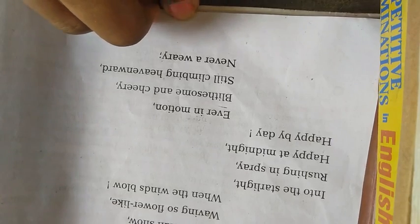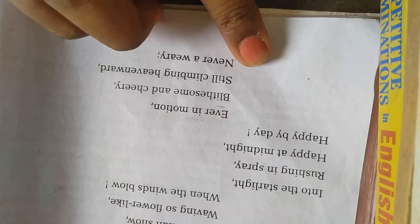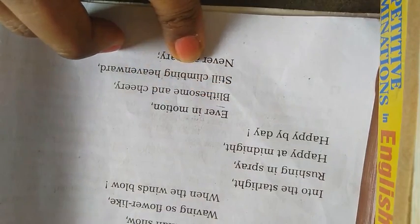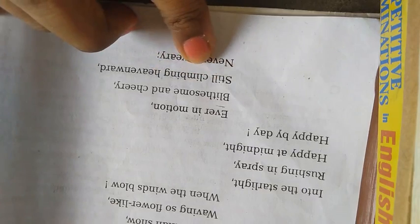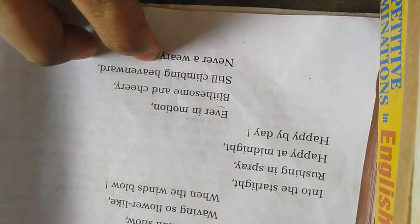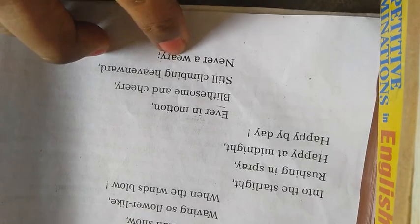'Ever in motion, blithesome and cheery, still climbing heavenward, never weary.' Blithesome, never weary means never tired. This fountain always lives in motion and never becomes tired. This fountain keeps climbing towards up and becomes happy.